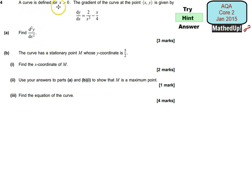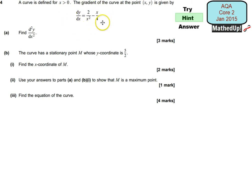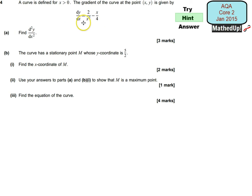We've got a curve that's defined for when x is greater than zero. At a particular point xy, the gradient is given by this function here. So we don't know the original equation of the curve, but we know that the gradient of it is given by this. For part A we want to find the second differential of the curve. We know what dy/dx is, so we can just differentiate this to give us the second differential.